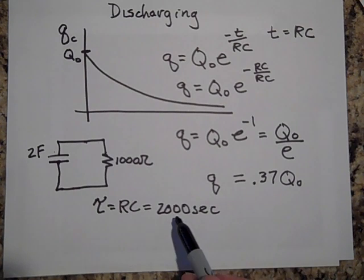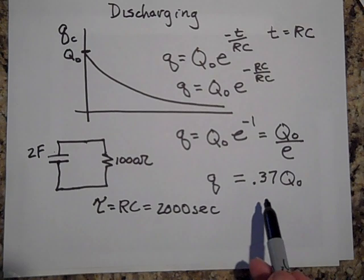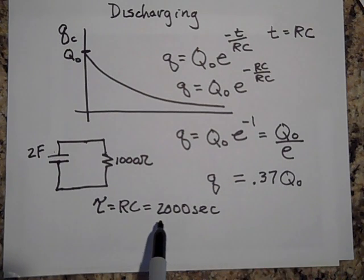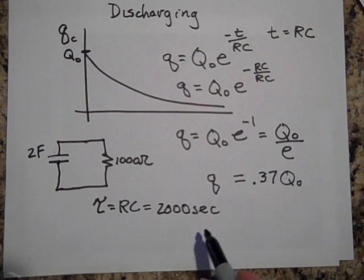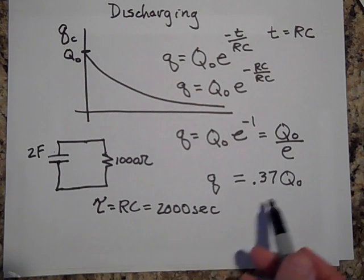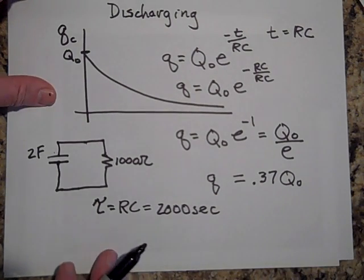And then if you wait an additional 2,000 seconds, it will get to a third of a third, so one ninth its original charge. And then if I wait another 2,000 seconds, like 6,000 in all, it will get to a third of a third of a third, so one 27th of its original charge. And so that's how you do that.